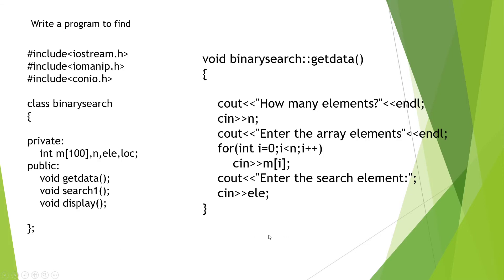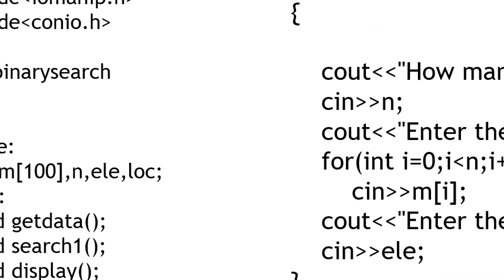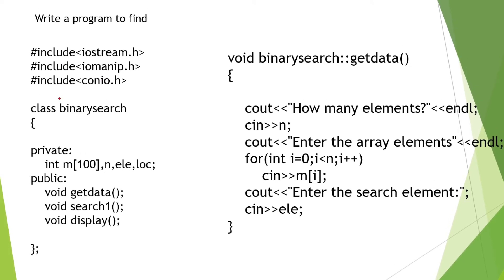Looking at the program, I have declared an array m of 100. n holds the size of the array, ele is the search element, and loc stores the position where the element is found. I have a class named binary_search. In the private section the variables are declared, and in the public section the functions are declared. There are three functions: get_data, search_one (which does the binary search), and display.